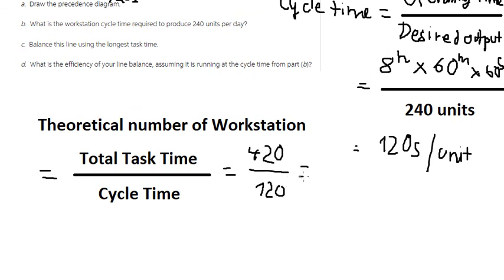We have 3.5, so that means we round up the number in here and we have 4 workstations.